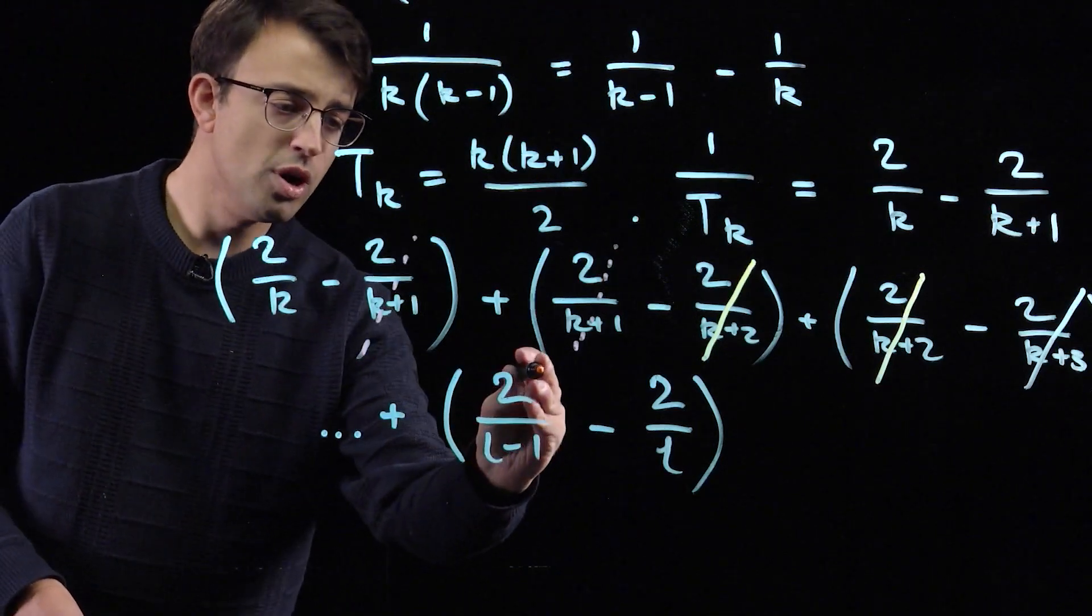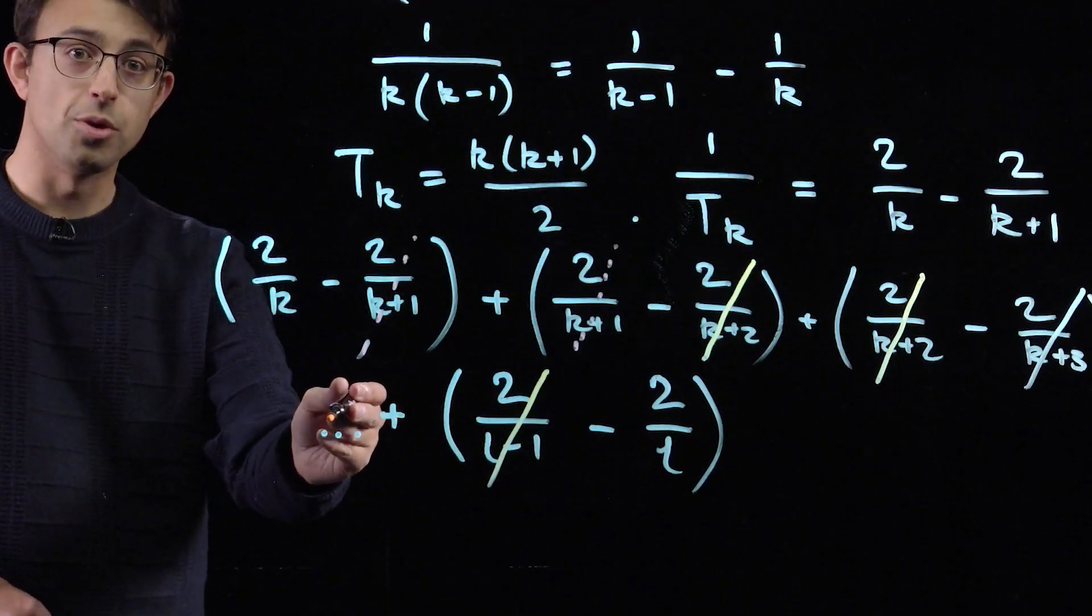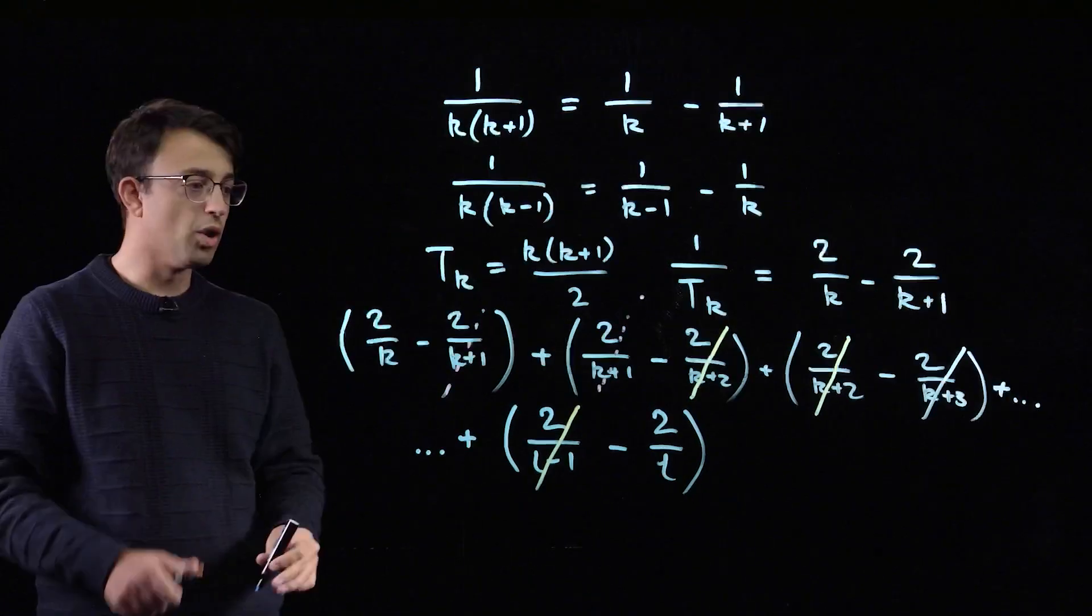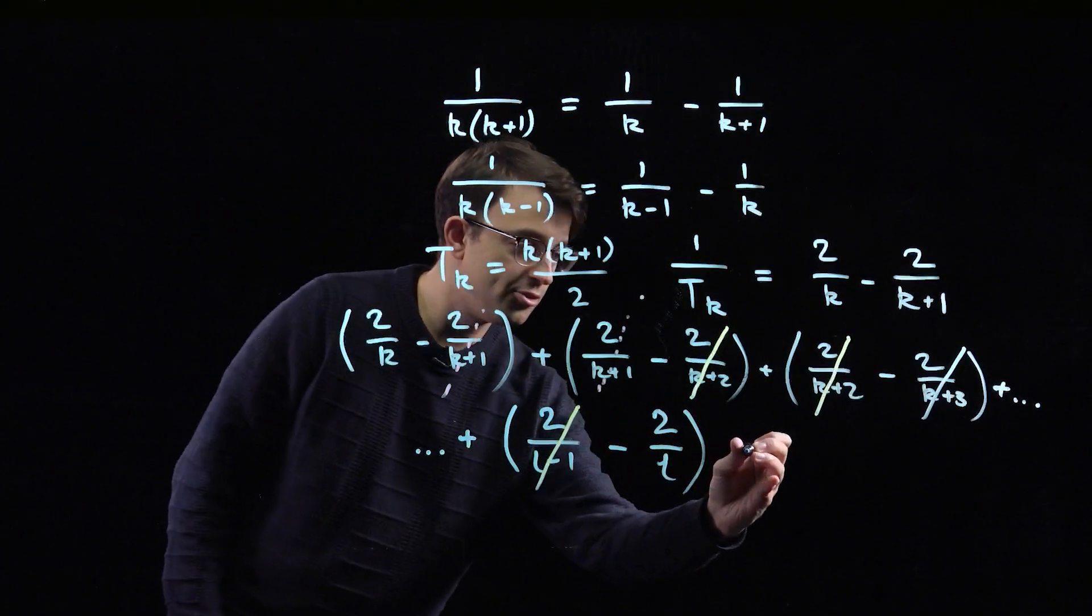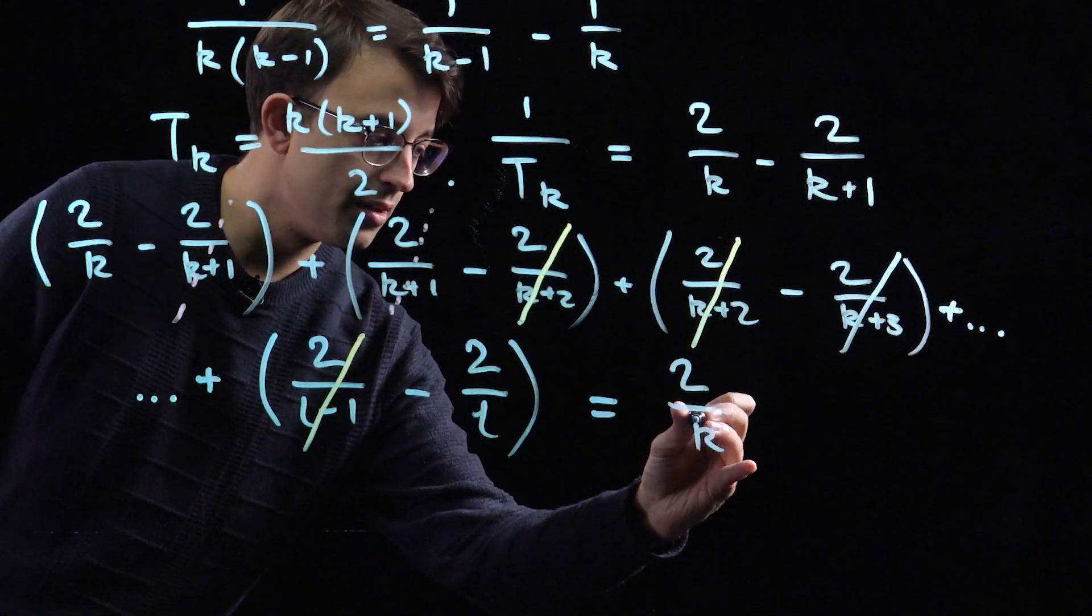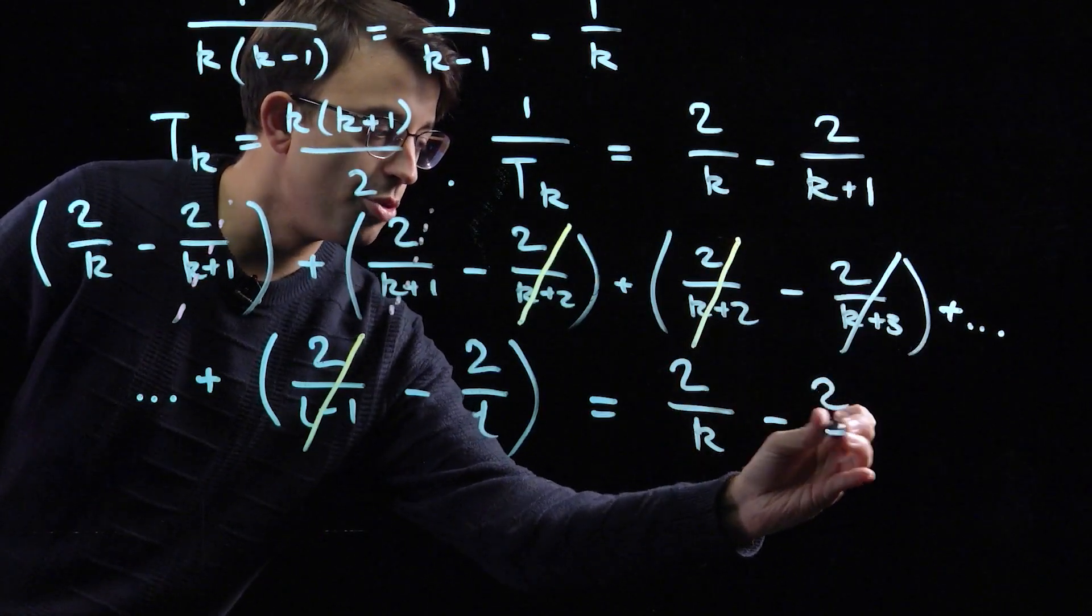So 2 over l minus 1 is going to cancel with the previous bracket that I haven't actually written in this sum. And what we're going to end up with is 2 over k minus 2 over l.